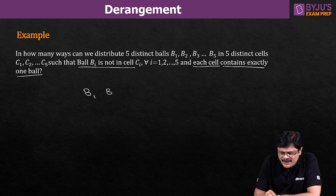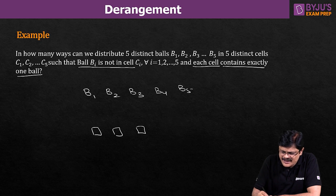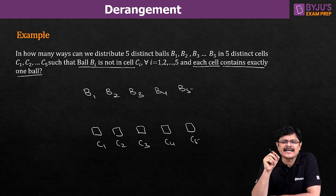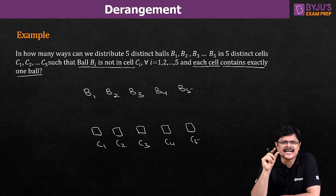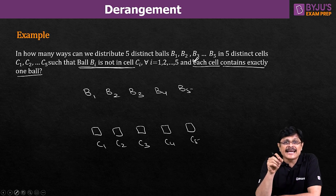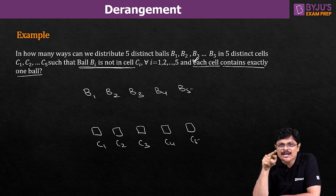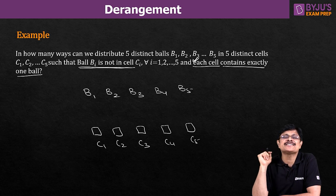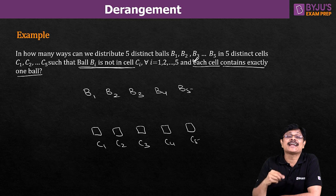We have five balls B1, B2, B3, B4, B5 and five cells C1, C2, C3, C4, C5. If each cell can contain only one ball, the number of ways to arrange five balls in five cells is five factorial. That is the normal case. But here there is one more important condition: ball Bi cannot be placed in cell Ci. That means B1 cannot be in C1, B2 cannot be in C2, B3 not in C3, B4 not in C4, and B5 not in C5. With this condition, how many arrangements are possible?